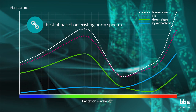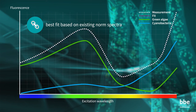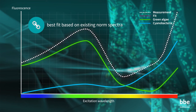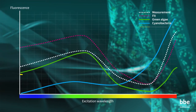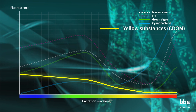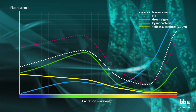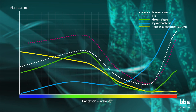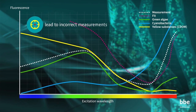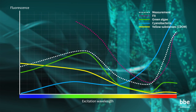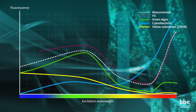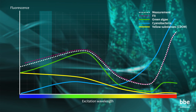In this case, the combination of two norm spectra is used. An important issue is the effect of so-called yellow substances, or colored dissolved organic matter. These compounds have interfering fluorescence effects and will lead to incorrect measurements. Knowing the fluorescence properties of yellow substances, the BBE devices compensate for their effects.